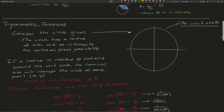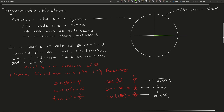Now let's get to the trig functions of a unit circle. Consider the circle on the right — this circle has a radius of one and intersects the Cartesian plane predictably. The circle will intersect our plane at four points: (1, 0), (0, 1), (−1, 0), and (0, −1). If our radius is rotated theta radians around the unit circle, the terminal side will intercept the circle at some point (x, y).